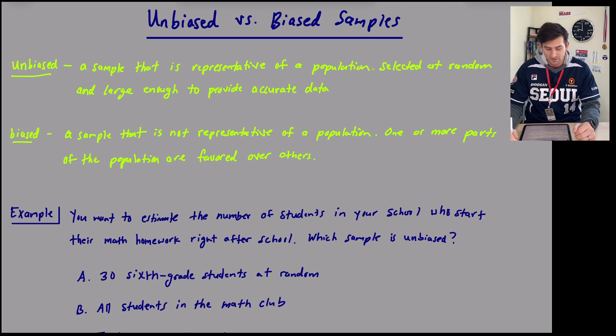Now for a biased sample, it's basically the opposite. What is biased? It would be a sample that is not representative of a population. One or more parts of the population are favored over others. So obviously we can see some negative effects there for a biased sample that would lead to some invalid conclusions. We'll talk about conclusions that we can make from samples and how we can determine whether they are valid or invalid in the next video.